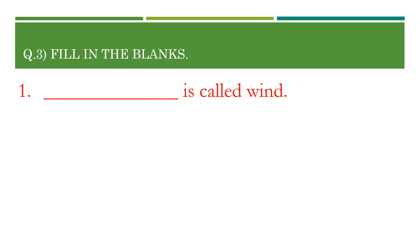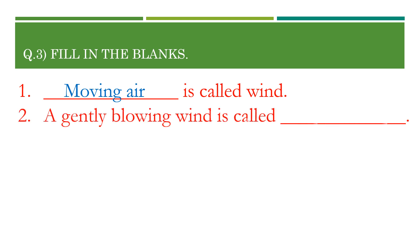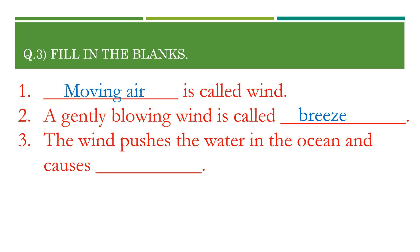Now we will see question number 3 — fill in the blanks. Number 1: Dash is called wind. Moving air is called wind. Number 2: A gently blowing wind is called breeze. Number 3: The wind pushes the water in the ocean and it is called waves. Answer is waves.